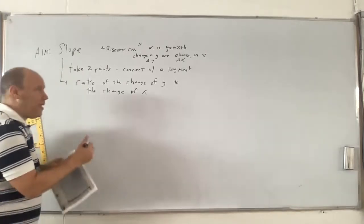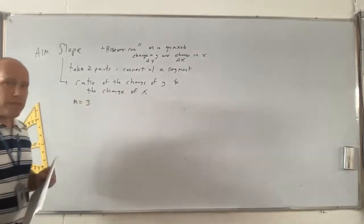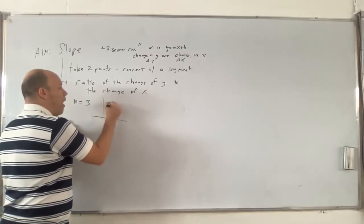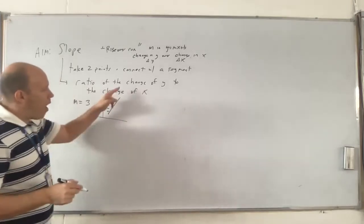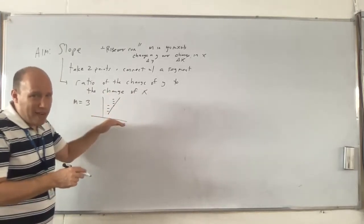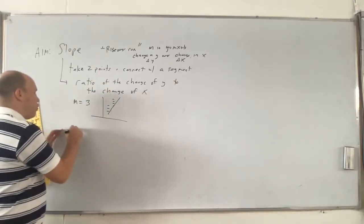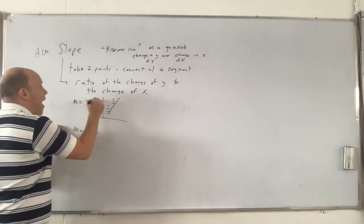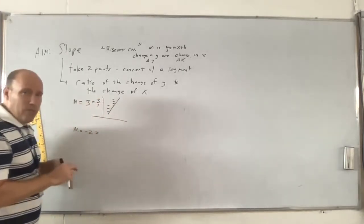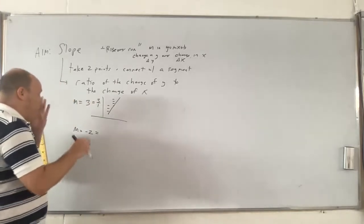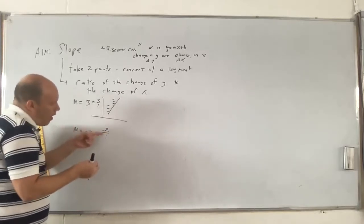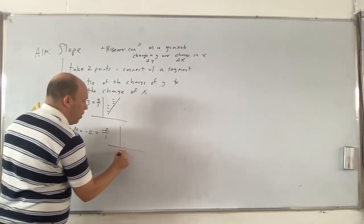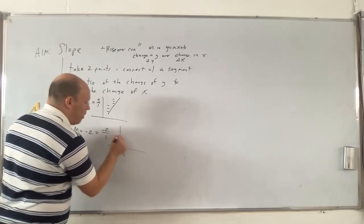For example, if m equals 3 — if someone says the slope is 3 — you know that from a starting point it means go up 3 and to the right 1. That's the change of y as x moves to the right; y is increasing by 3. If the slope is negative 2, we go down 2 as we go to the right 1.